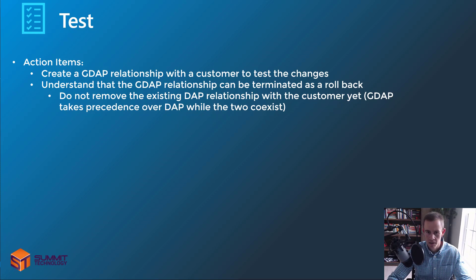You need to understand that the GDAP relationship can be terminated as a rollback, and you do not want to remove the DAP relationship — the legacy delegated admin permissions — just yet. While GDAP and DAP coexist, GDAP does take precedence, so you'll still get good testing data. You can also use this time to test out the bulk migration tools at your disposal — both the bulk migration tool from Microsoft and the CIPP bulk migration tool — so when you do the broad rollout you're not making mistakes the first time you use the tool.